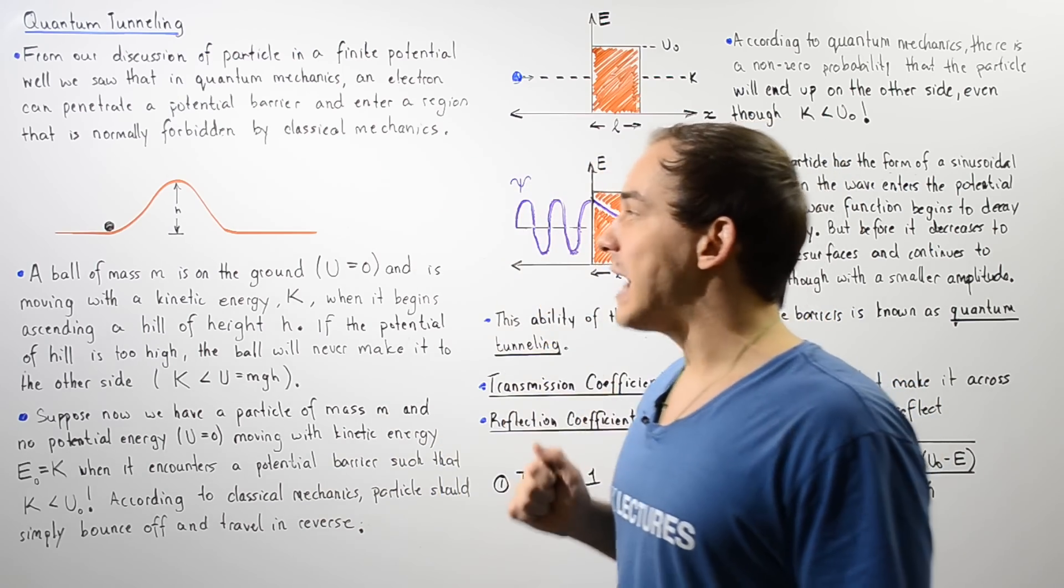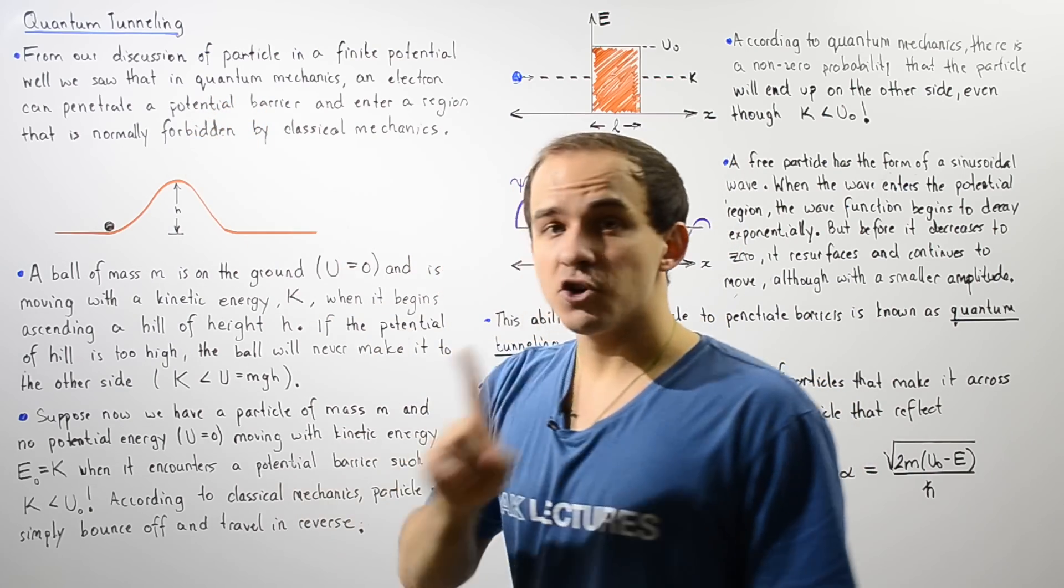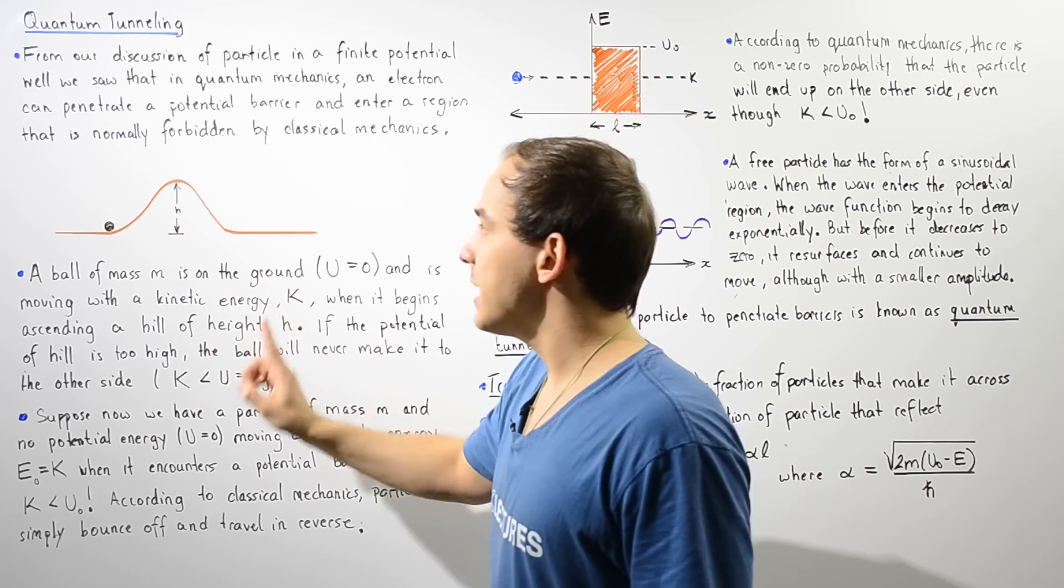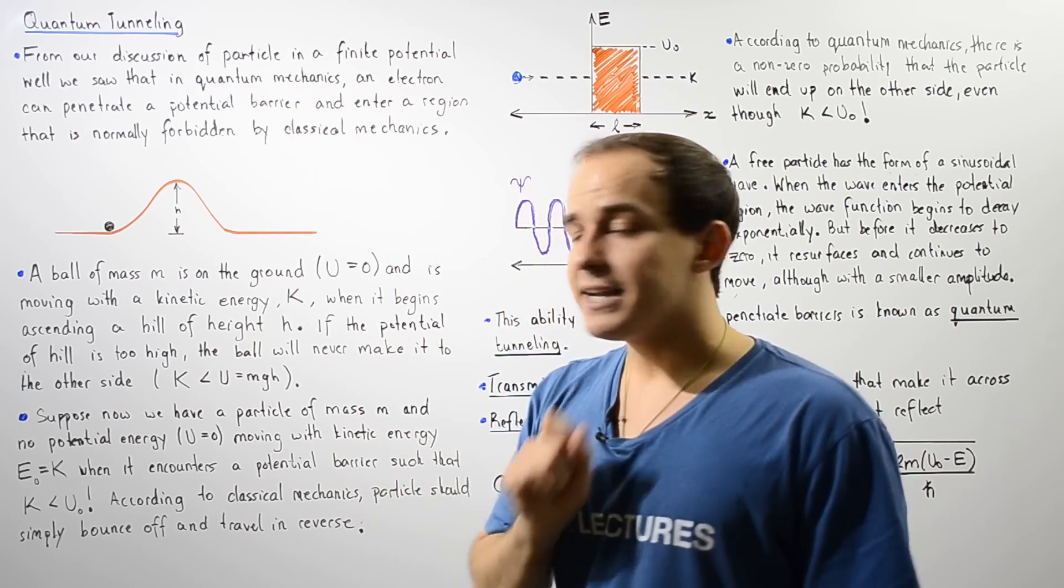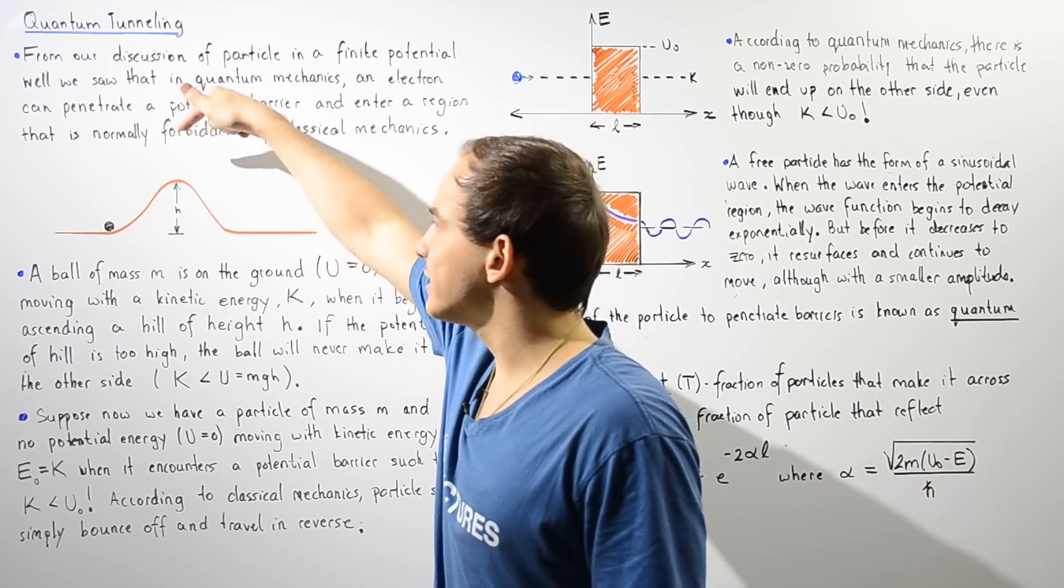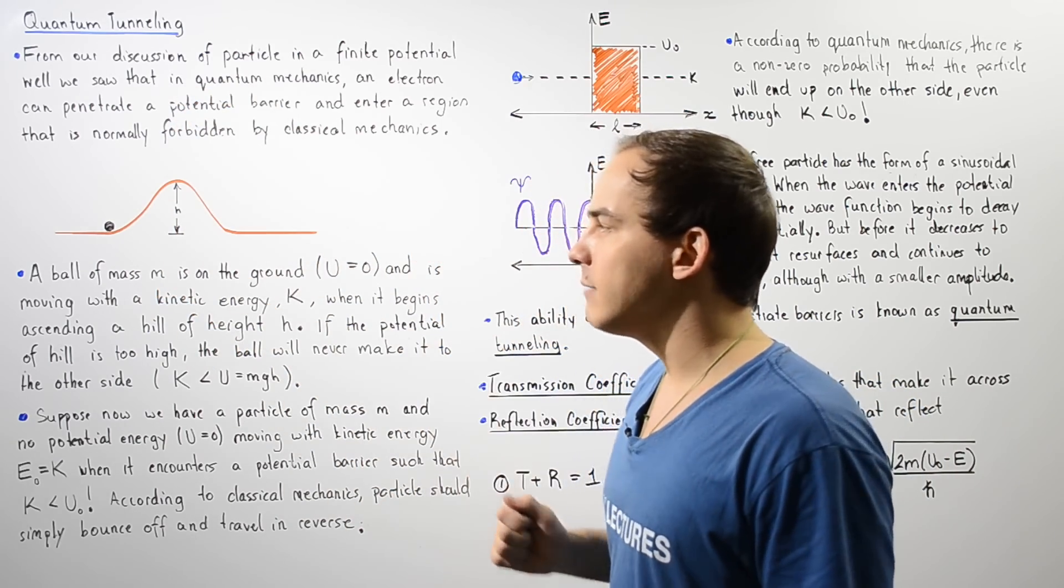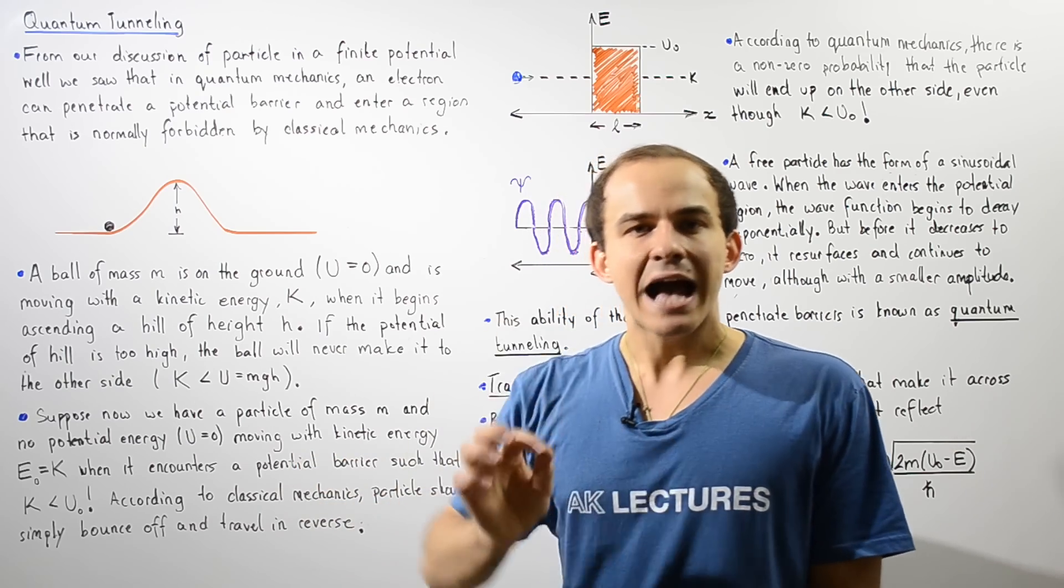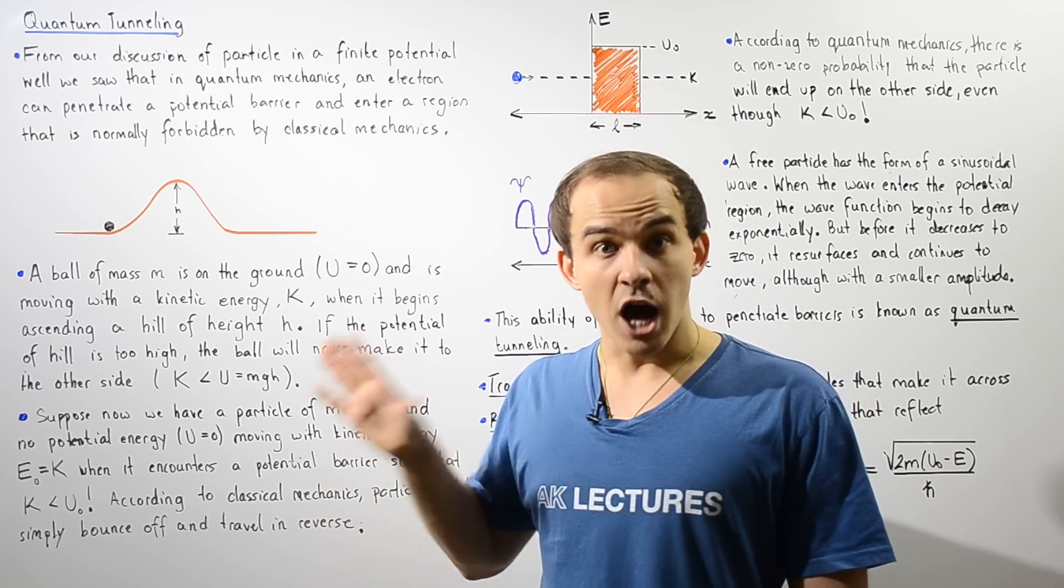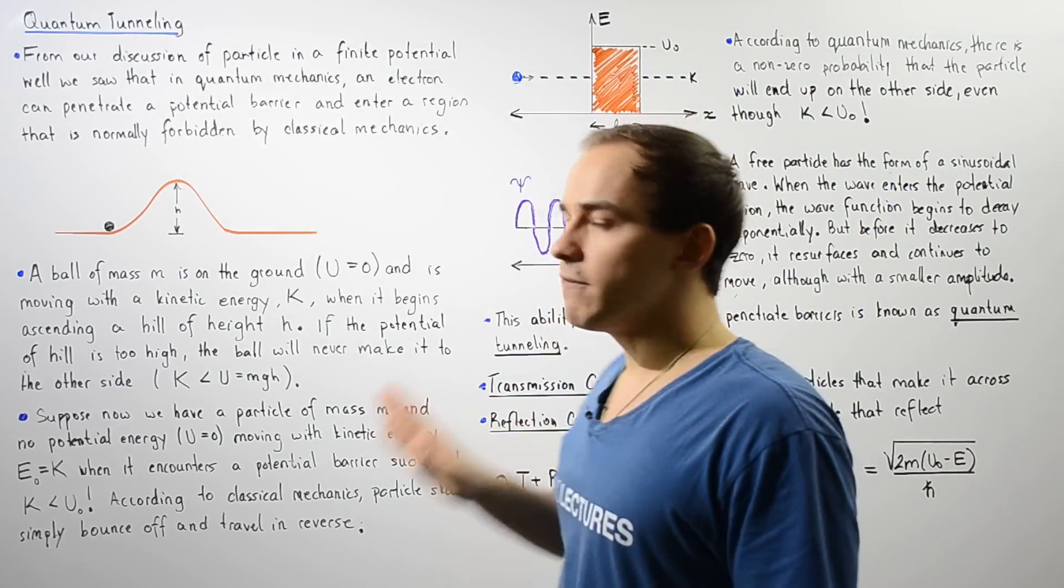Now we know from classical mechanics that if the gravitational potential of the hill is too high, that is if the gravitational potential energy of the object at the top of the hill is greater than the initial kinetic energy of that object at the bottom, there is absolutely no way that our object will be able to end up on the other side of that hill.